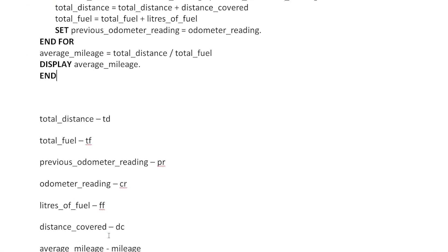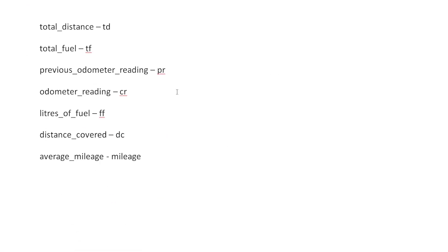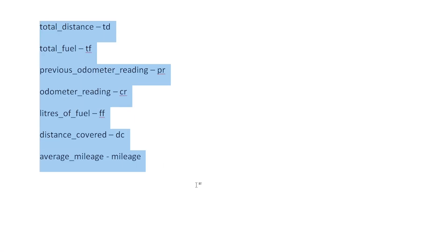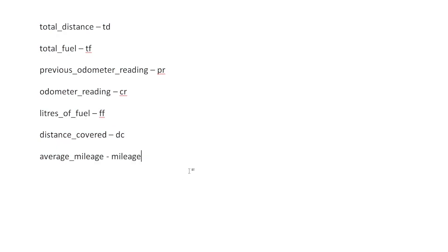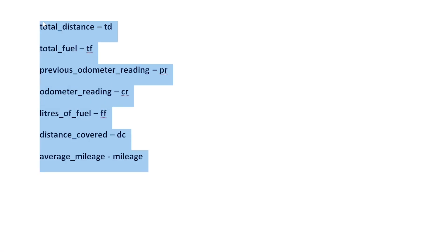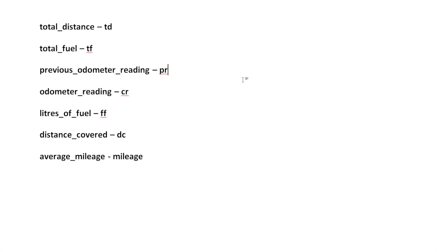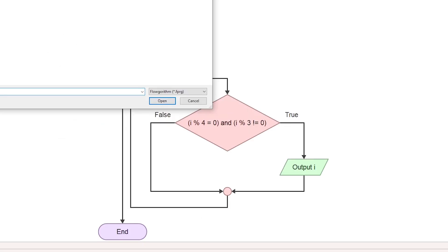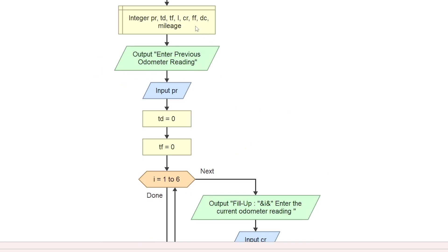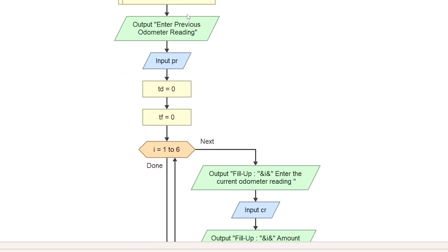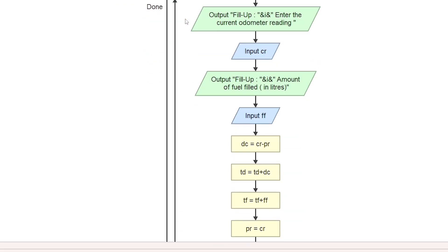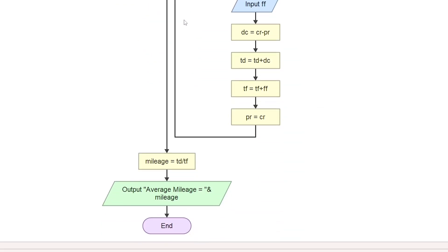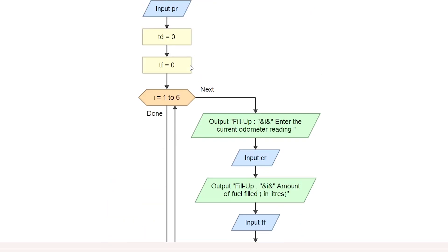To complete the flowchart, we use short variable names — for example, total distance as 'td' and total fuel as 'tf'. These short forms keep the flowchart readable.